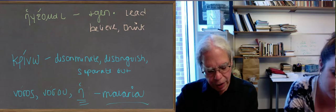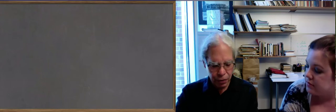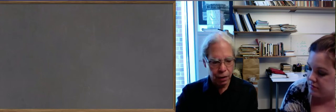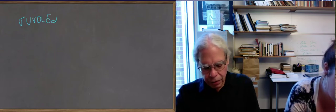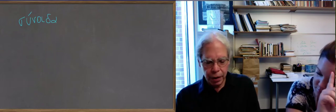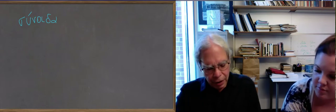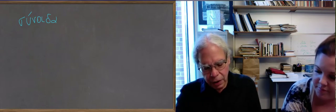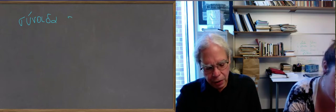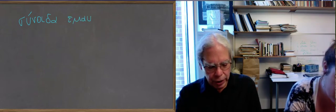Next one is oida, which we spend a lot of time on the forms of it. It gives you the future of it, which we didn't even talk about at all, which is eisomai, because it's a regular future. Notice that it's a middle future. But one thing that it does teach you is a compound verb, sunoida, which it tells you, governs a dative, but it governs a dative of the reflexive pronoun. So in the vocabulary notes, they give you the standard sentence with sunoida.